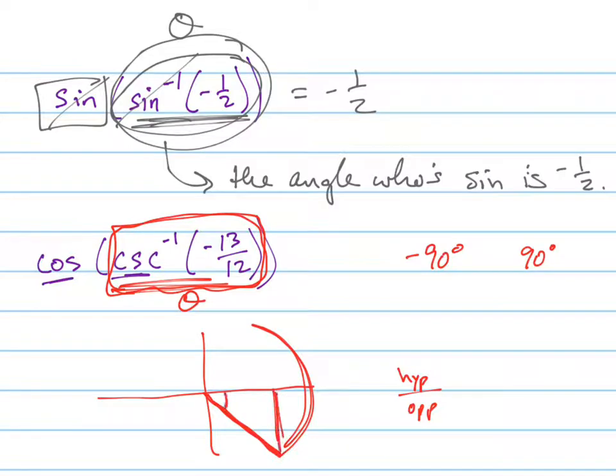And so this would be here. And so my triangle, here's my angle right here, my theta. And my triangle, remember, this is the hypotenuse, and this is the opposite. So the opposite is negative 12, and hypotenuse is 13. Hypotenuse always has to be positive. So if it's a negative 13 over 12, then you know that the negative has to go with the 12, not with the 13, because the 13 represents the hypotenuse.